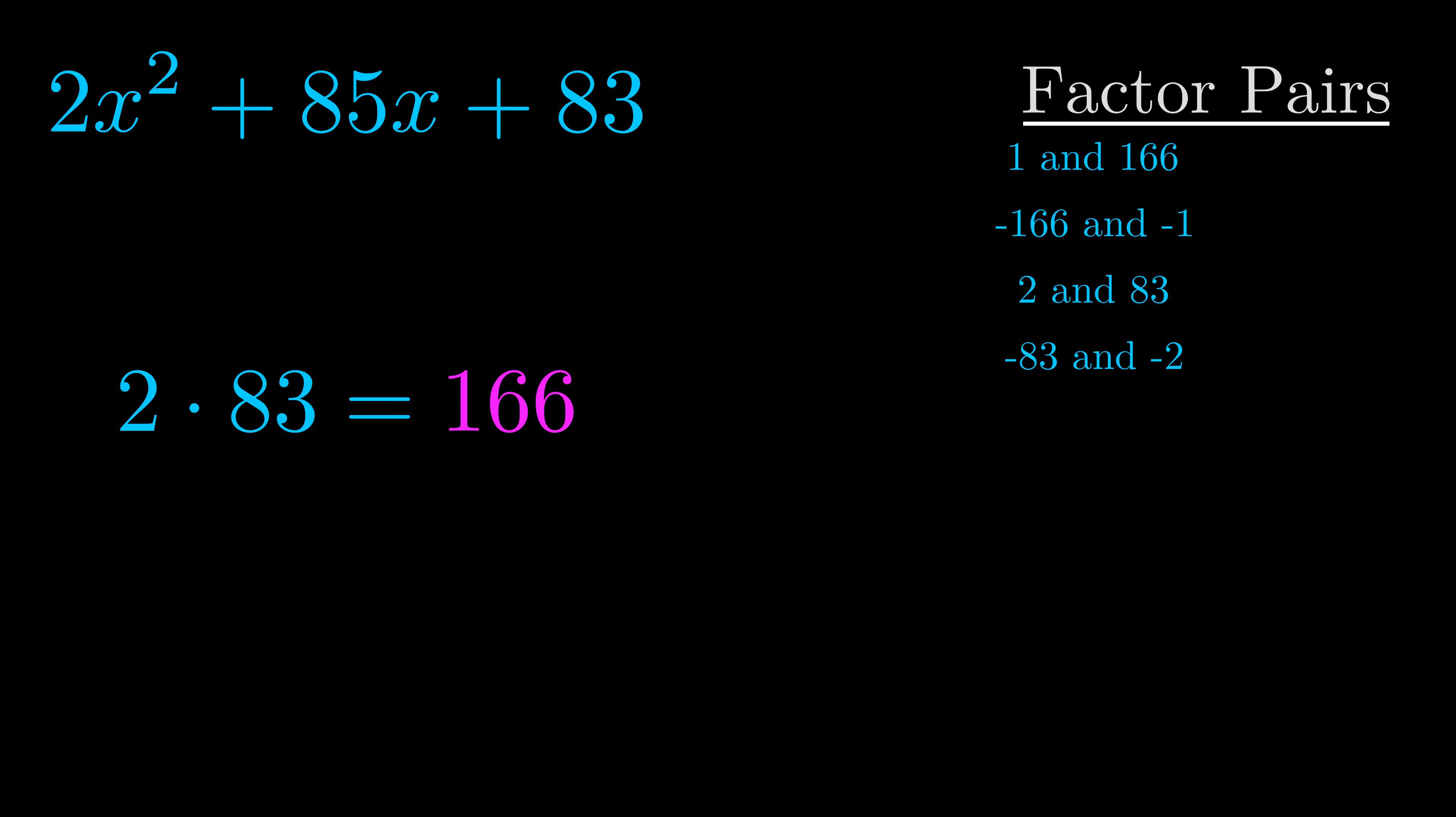Now once you have these factor pairs, the goal is to find which of these pairs adds to the b value. The b value is the coefficient on the x term. That's the middle term, the one that we haven't done anything with yet. And really this is the only factor pair that we need.